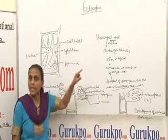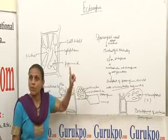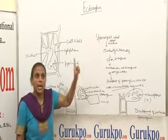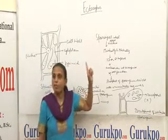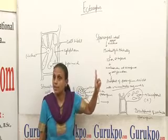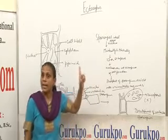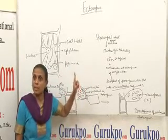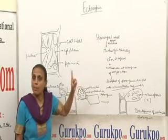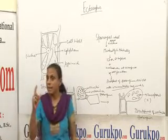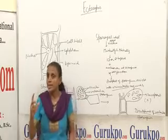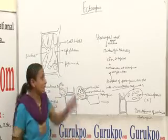Moving to the thallus — as you see in the diagram, the thallus of Ectocarpus is heterotrichous in nature. It consists of a prostrate rhizoidal system and an erect system. The erect part of the thallus is irregularly branched and the filaments are monosiphonous, that is one cell in thickness.